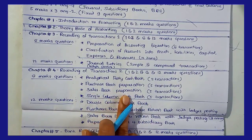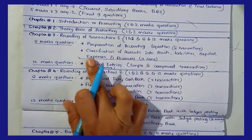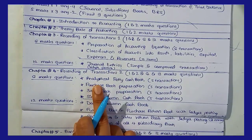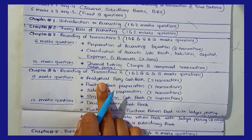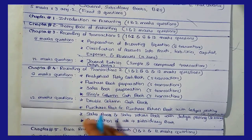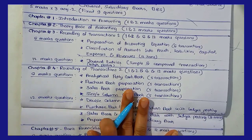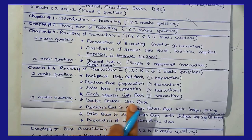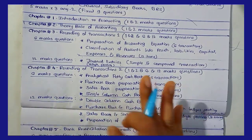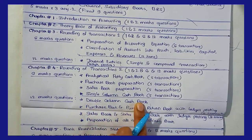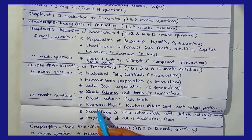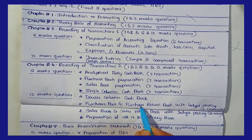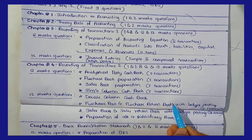So important is this easy topic. The 3rd chapter covers accounting equation preparation and classification of accounts — these are easy to answer. Here is the double column cash book — compulsory double column cash book questions. Two questions are expected because the double column cash book with contra entry is very important. So important is to answer 2 questions. Purchase book and purchase return book with ledger posting, with 6 transactions.